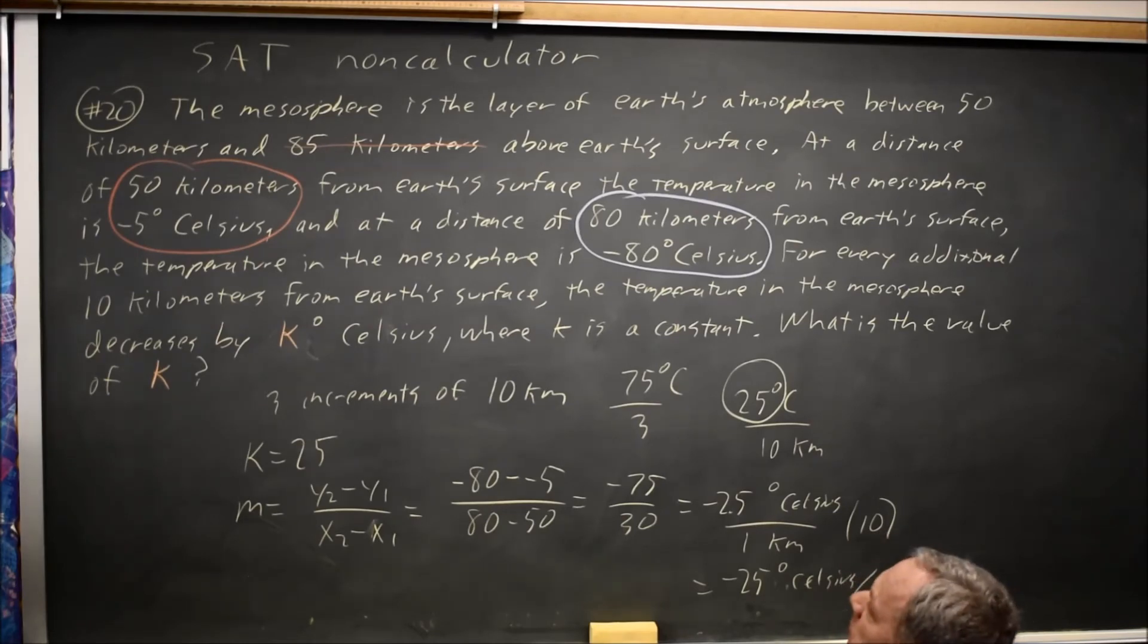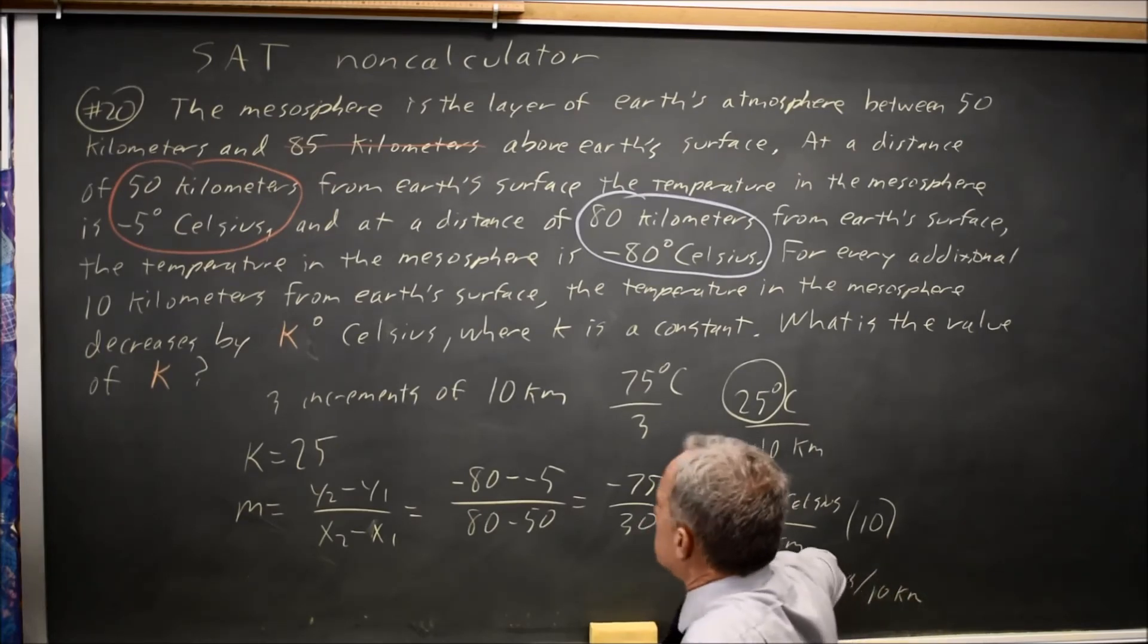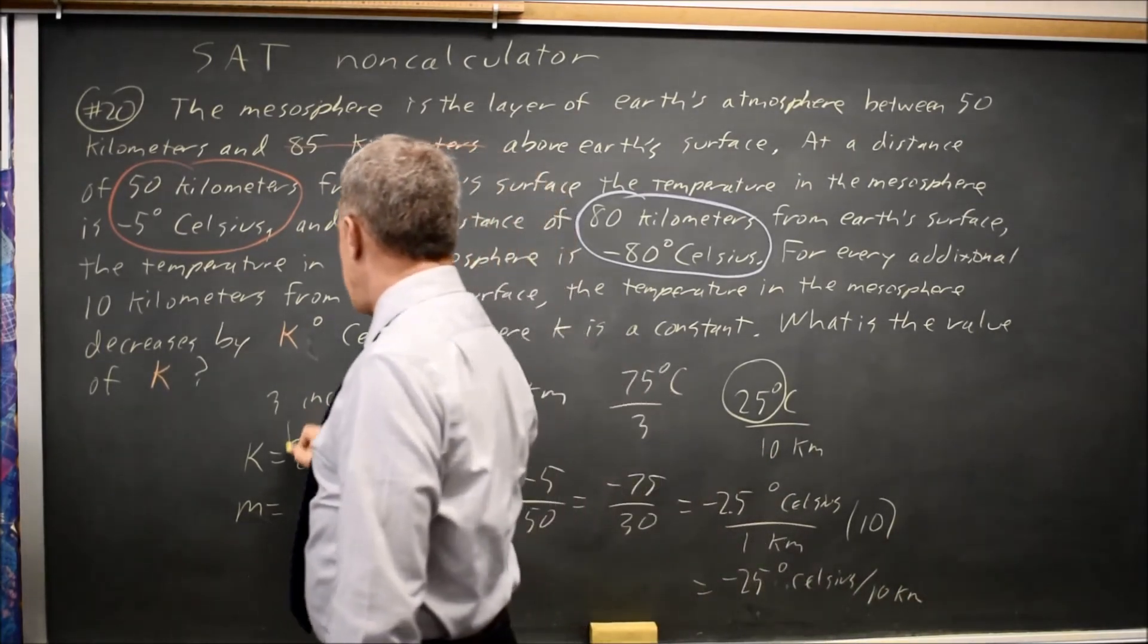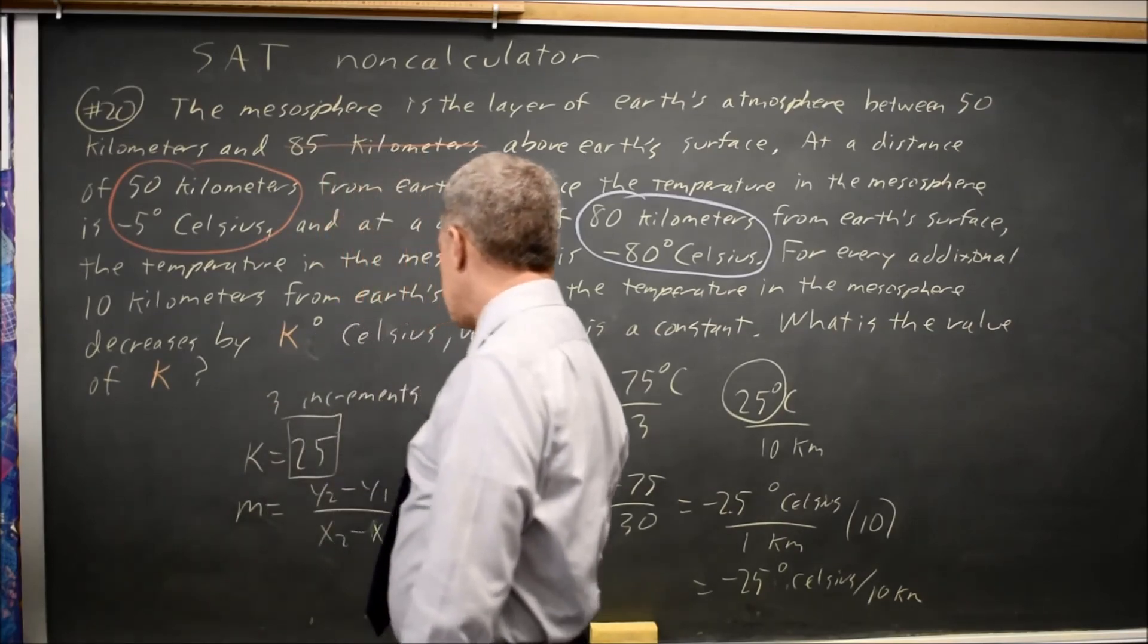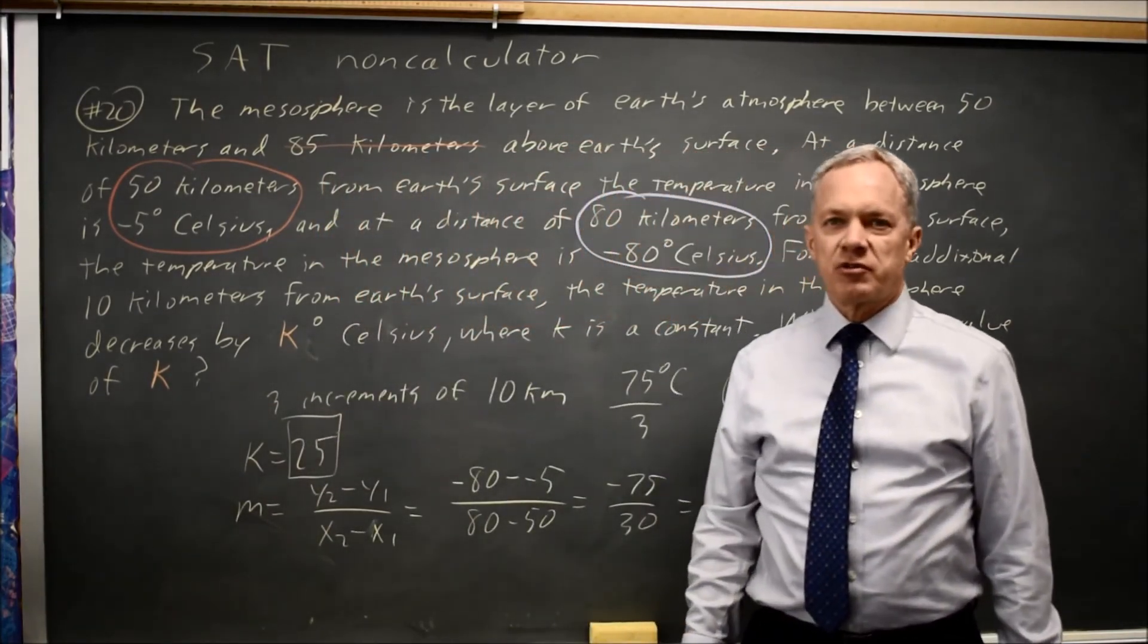And they're asking how much does it decrease? So that takes care of this negative, which is good because we're not allowed to grid in a negative. And once again, we get 25 Celsius degrees for every 10 kilometers.